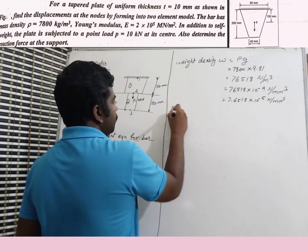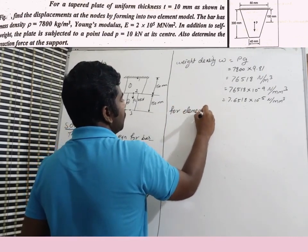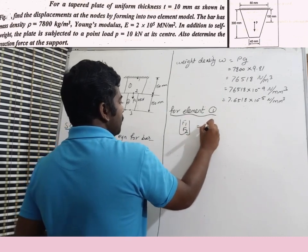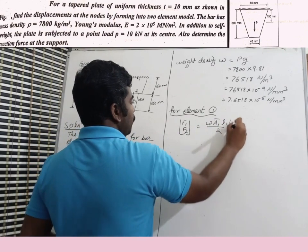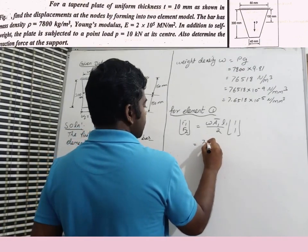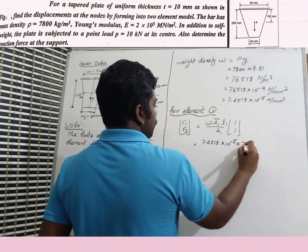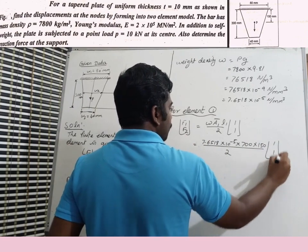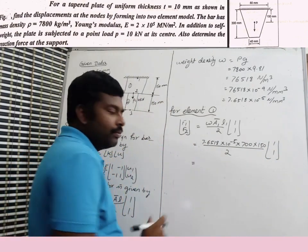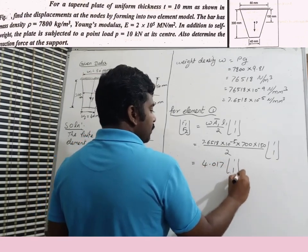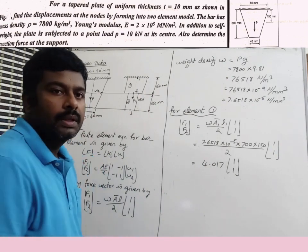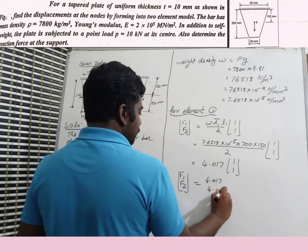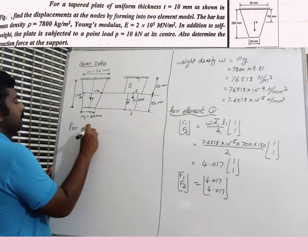For element 1, body force vector: {F1, F2} = W × A1_bar × (L1/2) × {1, 1} = 7.6518×10⁻⁵ × 700 × (150/2) × {1, 1}. Solving this gives {F1, F2} = {4.017, 4.017} N.